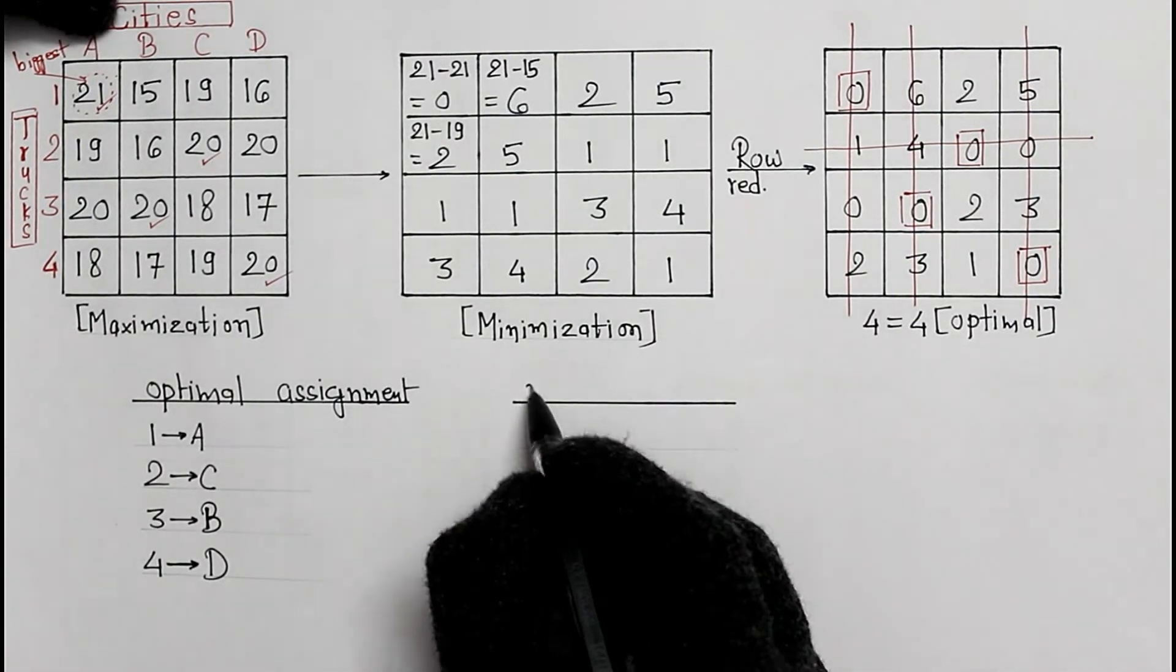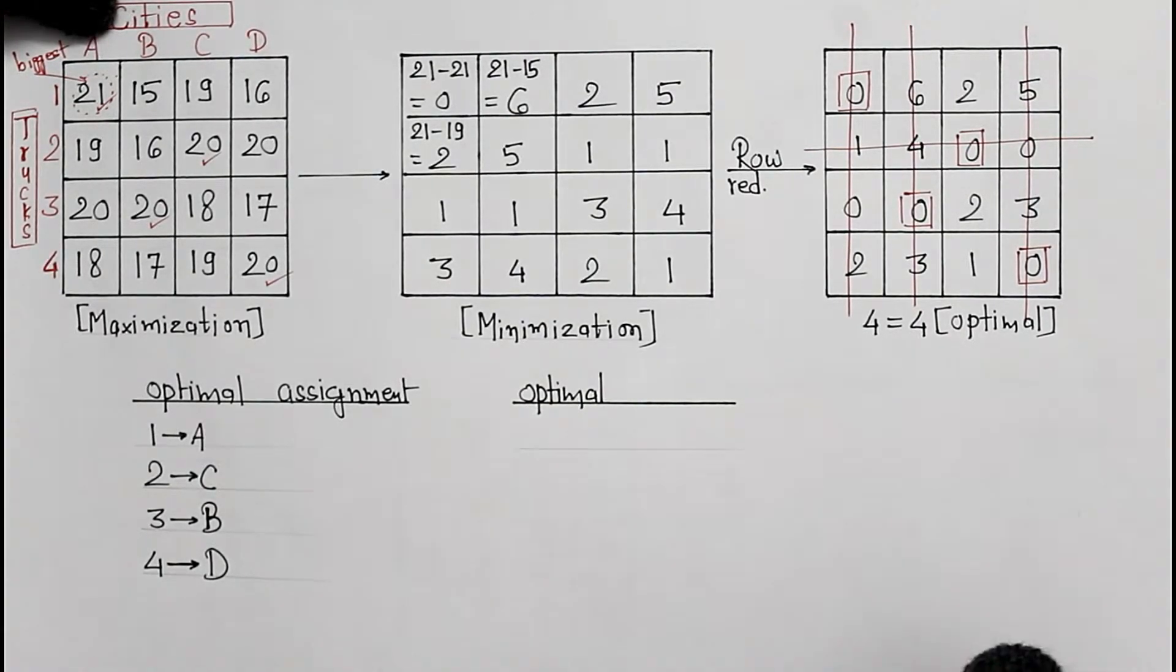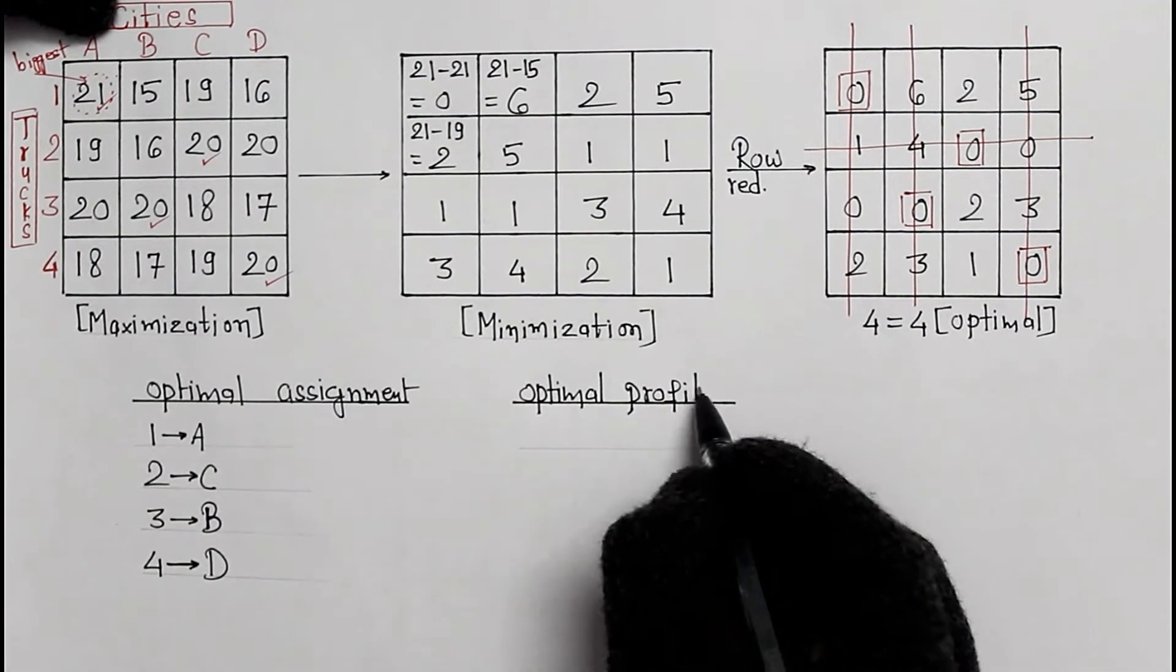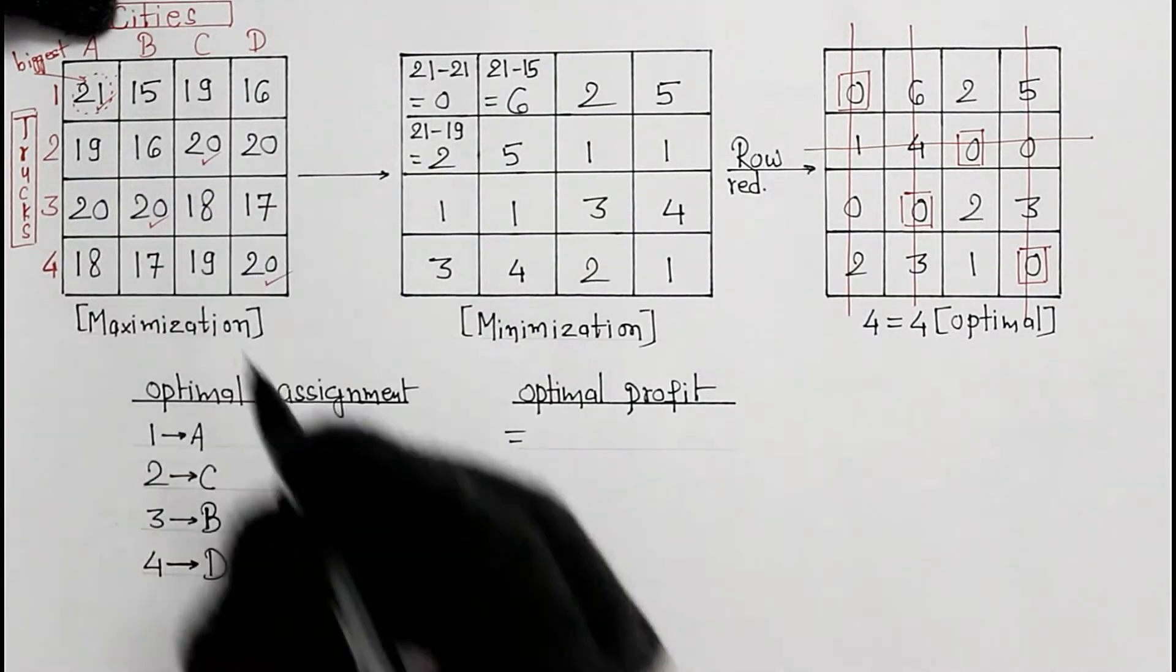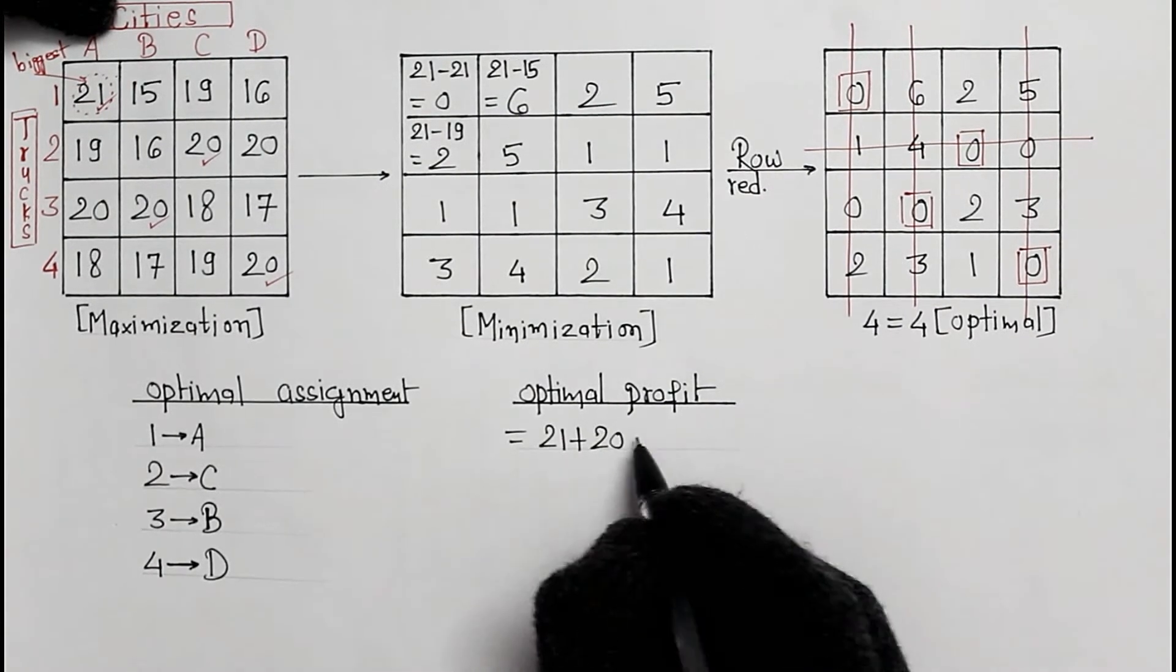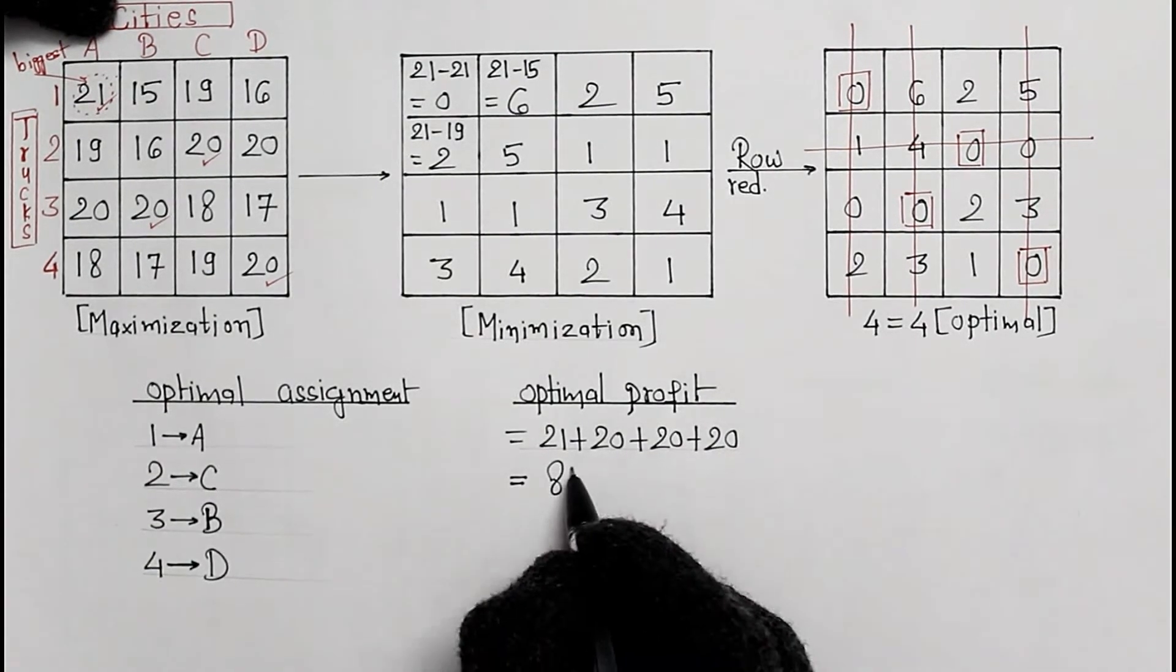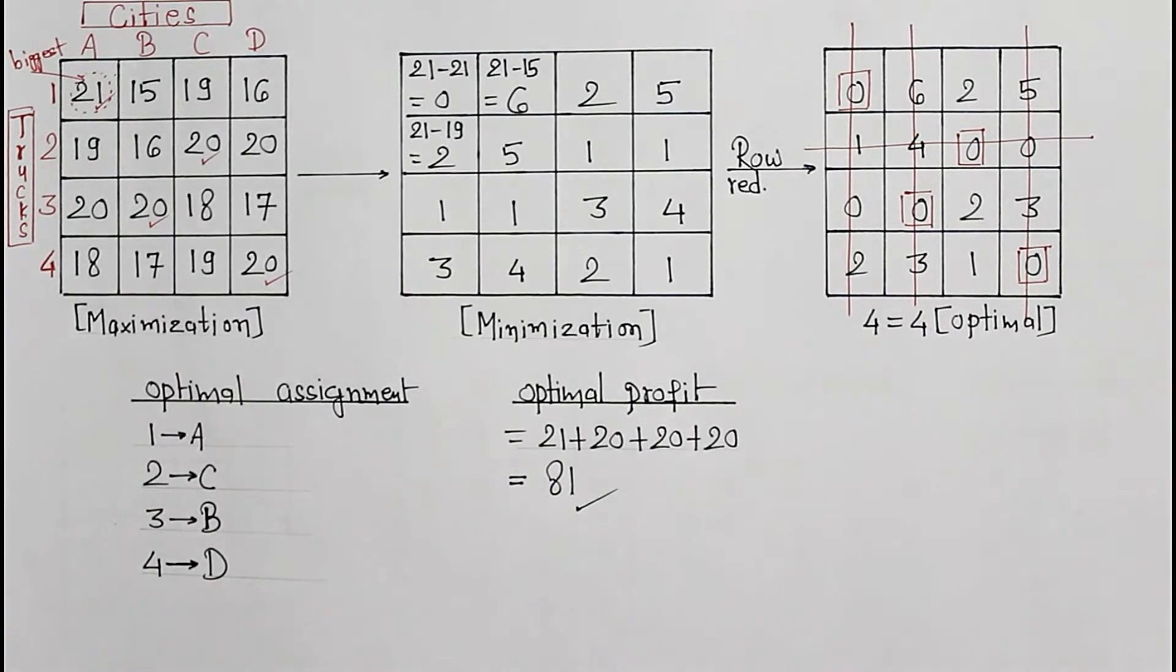Now the optimal, and this time we are calculating profit values. Be careful. Add all these 4 values. Total profit is 81. The maximum profit we can earn through this assignment model.